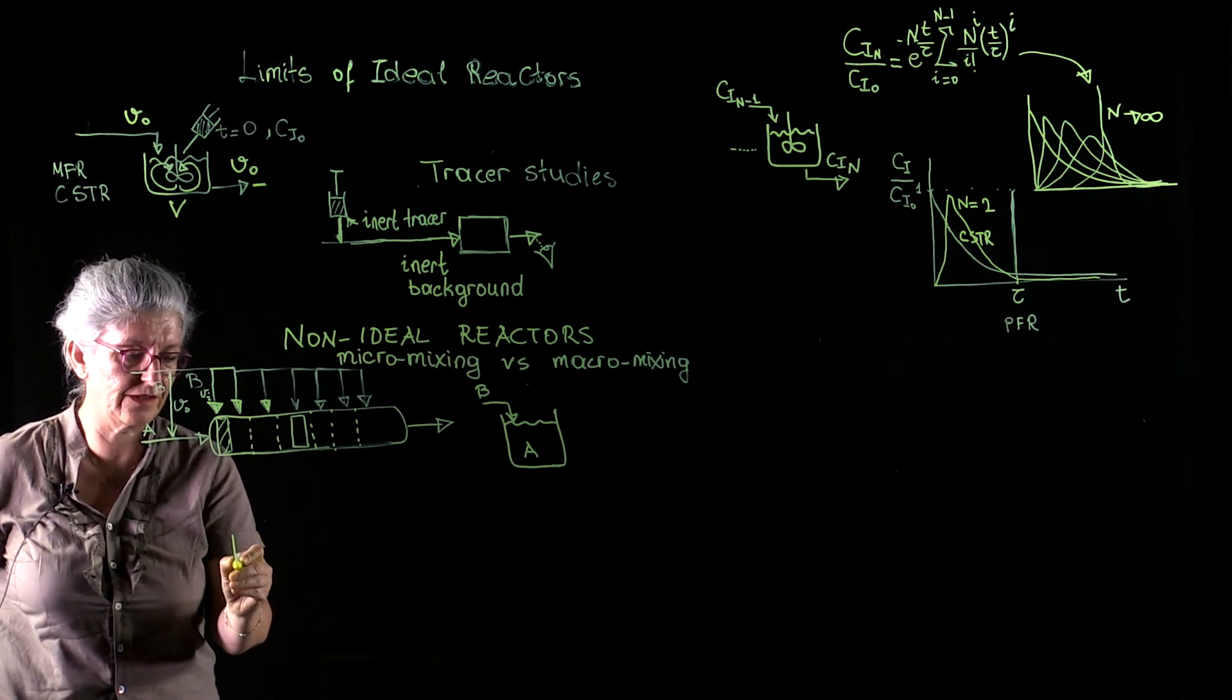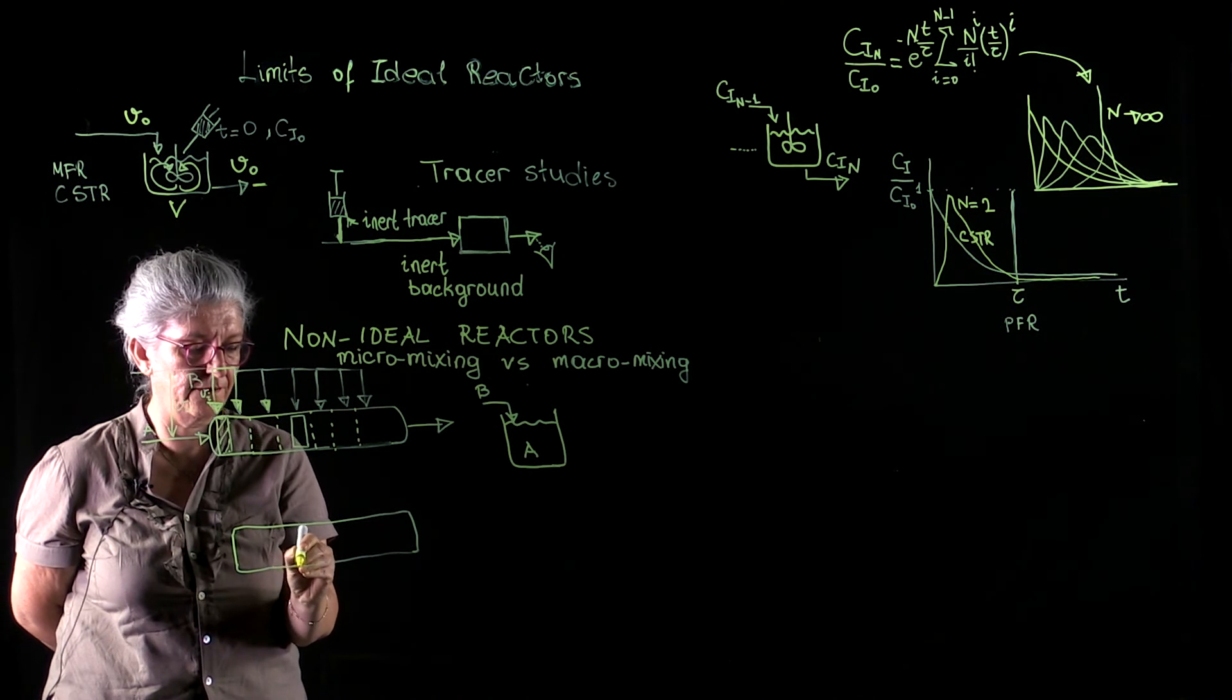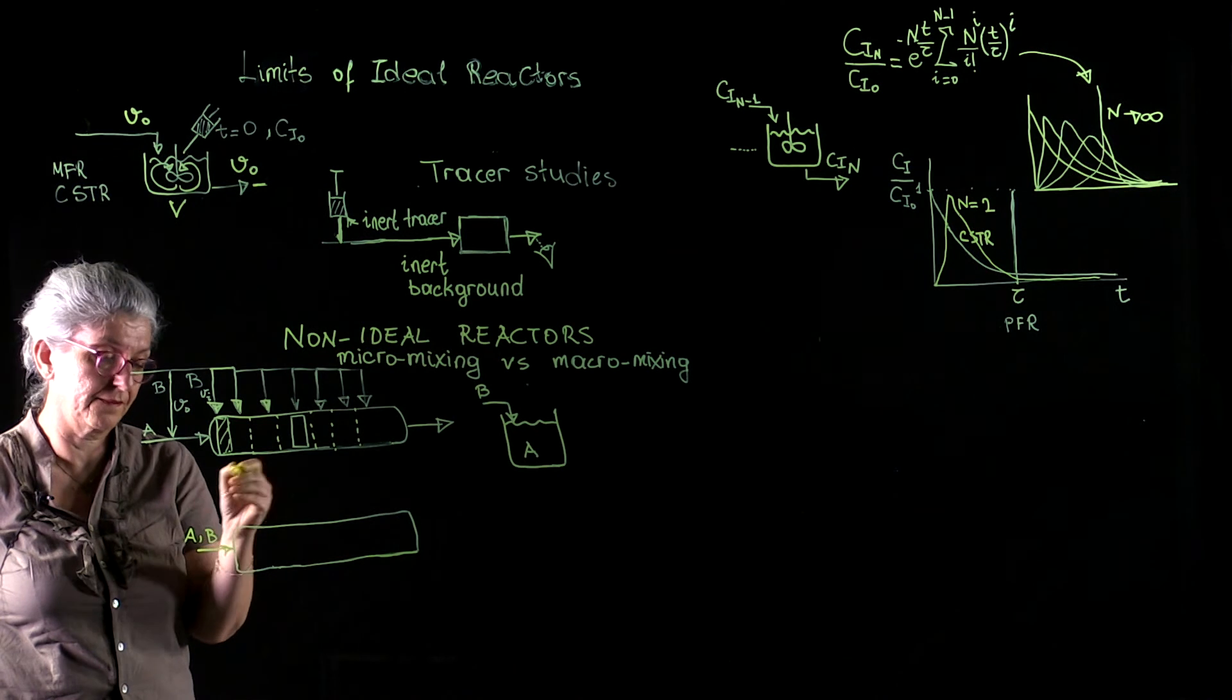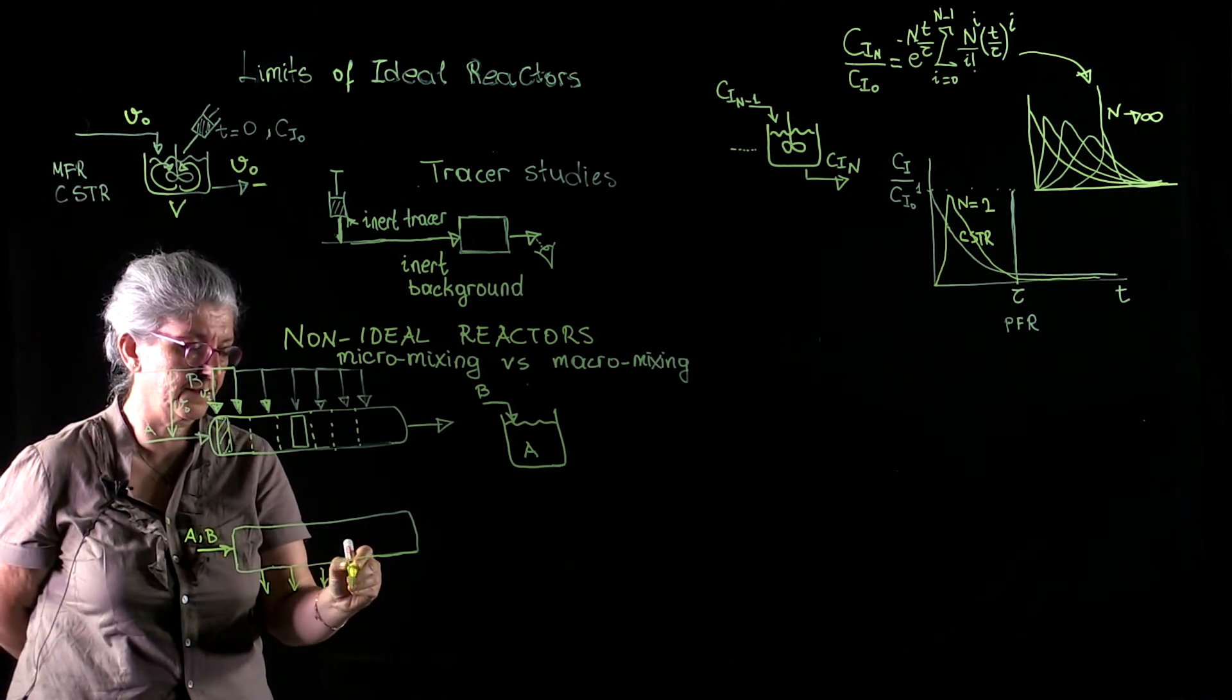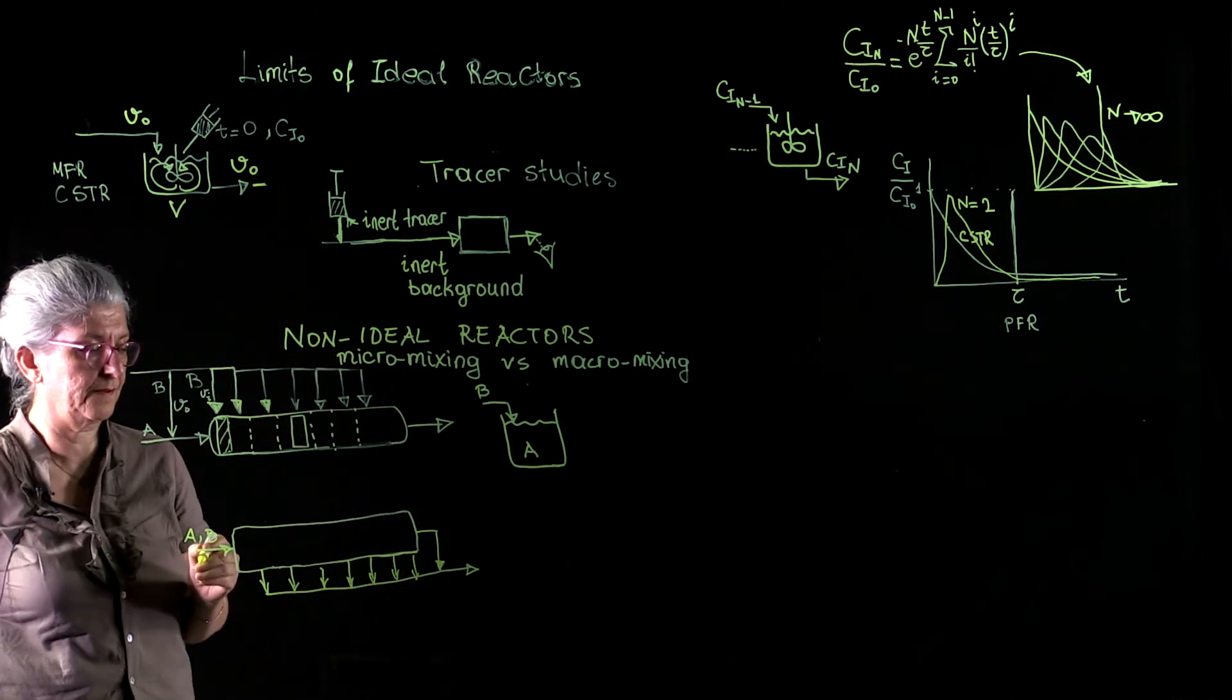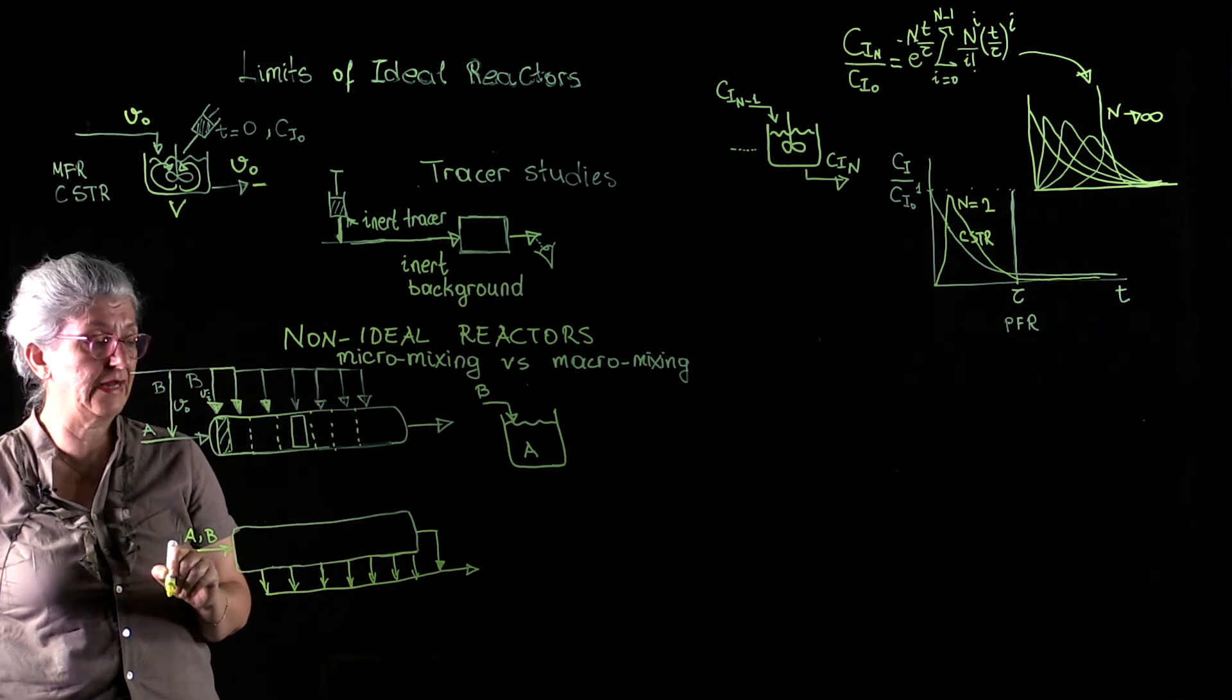On the other hand, we have another kind of reactor, a plug flow reactor, where we feed A's and B's, whatever our reactants are. And we gradually remove products. So, here, this product was removed after a short period of time. This product was removed after a little bit conversion has taken place, and so on and so forth.